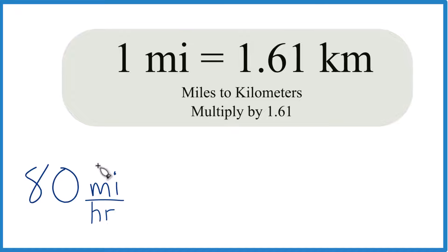So if we want to convert 80 miles per hour, we need to know that one mile equals 1.61 kilometers. That's our conversion factor there. If you need more decimal points, you can go 1.60934. Some people just use 1.61, a little bit easier.